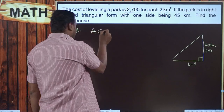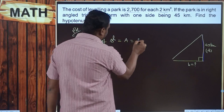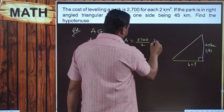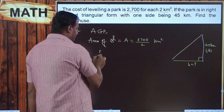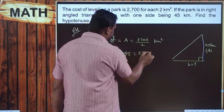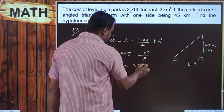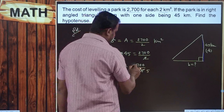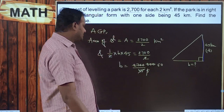Cancelling the 2s: base B = 2700 / 45. Simplifying by cancelling 9 from both: 9 × 5 = 45 and 9 × 3 = 27, so we get 300 / 5 = 60. Therefore the base is 60 kilometers.